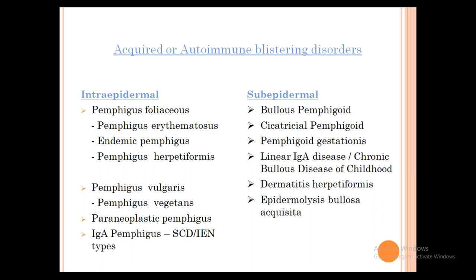Intra-epidermal blisters are characteristically flaccid, while sub-epidermal blisters are tense, fluid-filled. In autoimmune blistering disorders, antibodies are IgG or IgA. Most intra-epidermal disorders like Pemphigus Foliaceus and Pemphigus Vulgaris have IgG antibodies; IgA antibodies inside the epidermis indicate IgA Pemphigus. For sub-epidermal disorders, Bullous Pemphigoid is most common and contains IgG; Linear IgA disease and Dermatitis Herpetiformis have IgA antibodies.